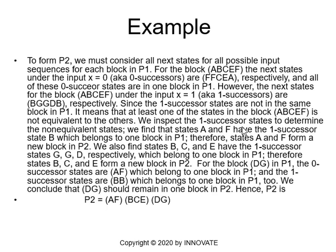For the block {D, G} in P1, the zero-successors are A, F, which belong to one block in P1, and the one-successors are B, B, which also belong to one block in P1. Therefore D and G remain in one block in P2. So P2 = {A, F}, {B, C, E}, {D, G}.